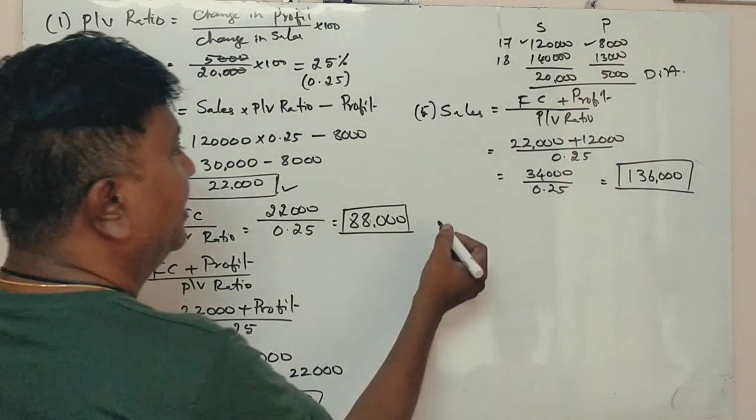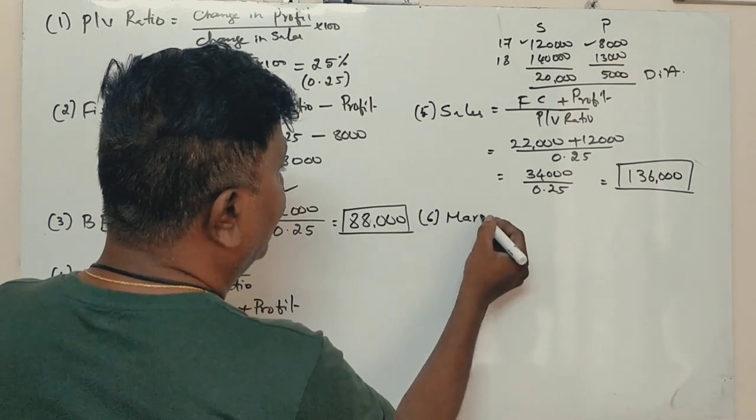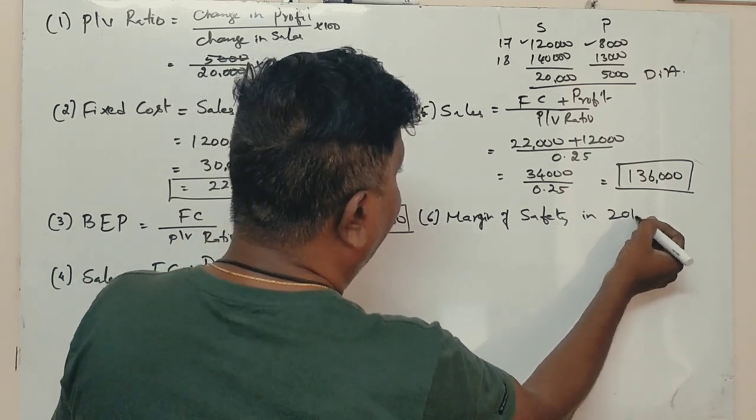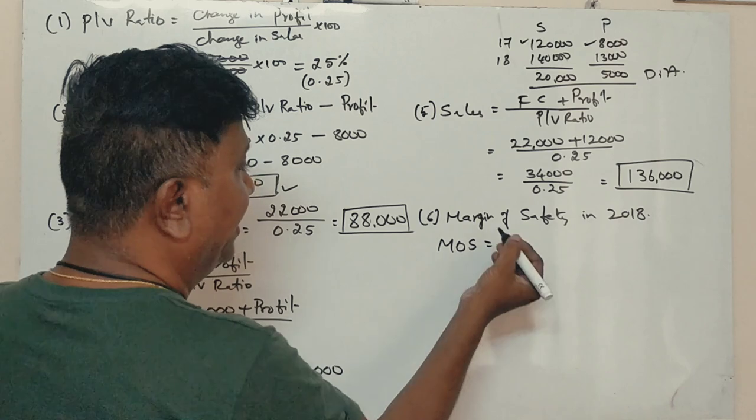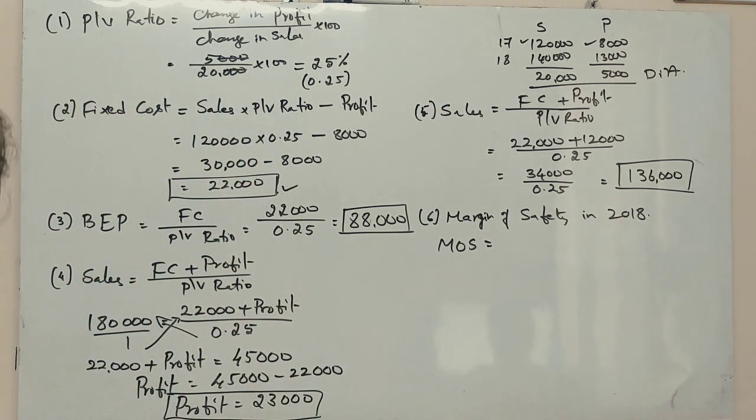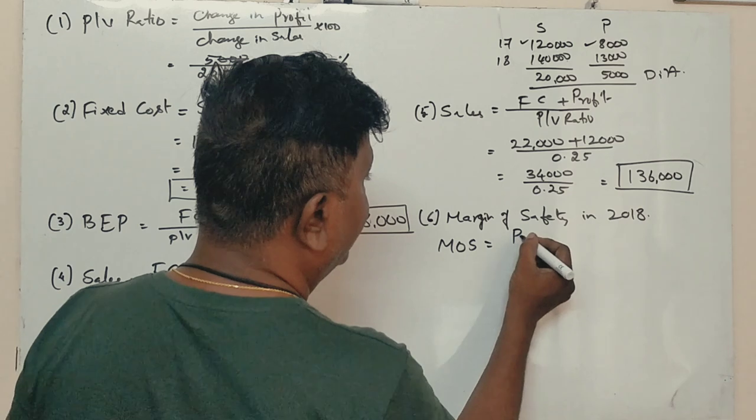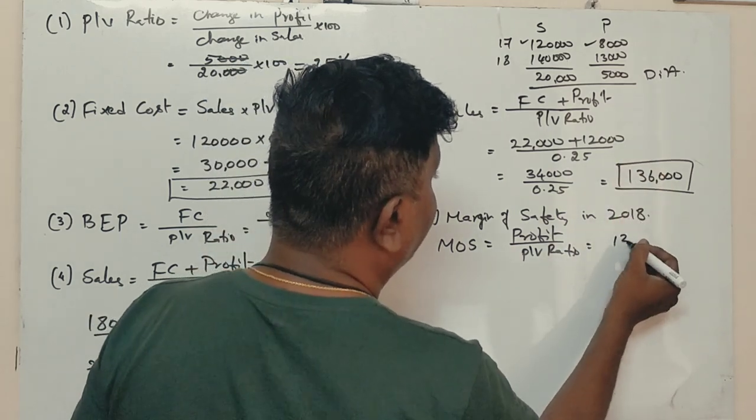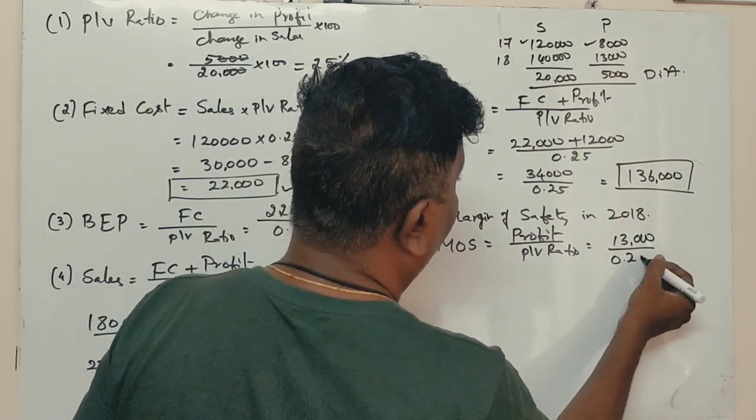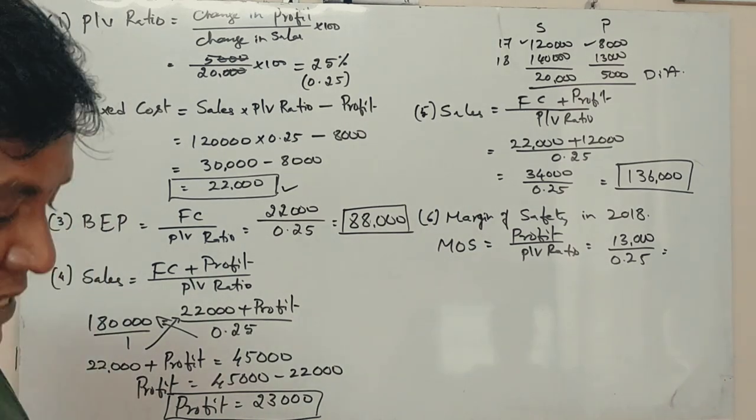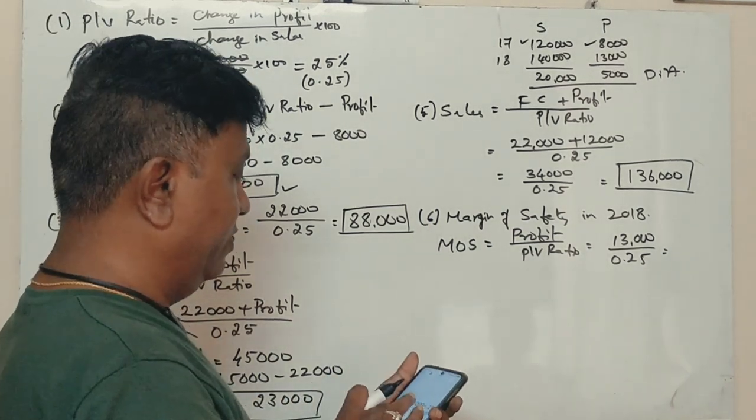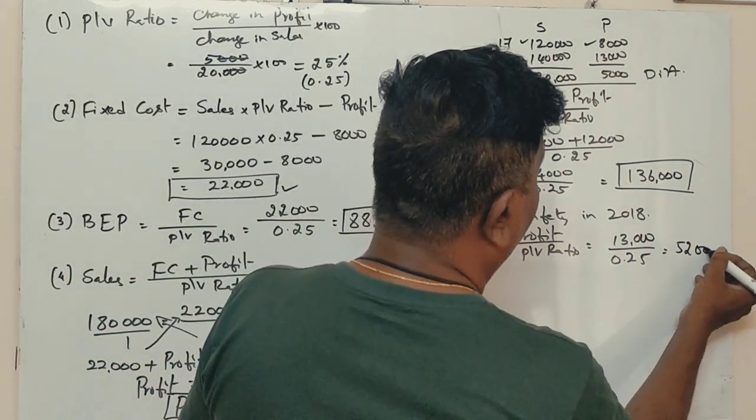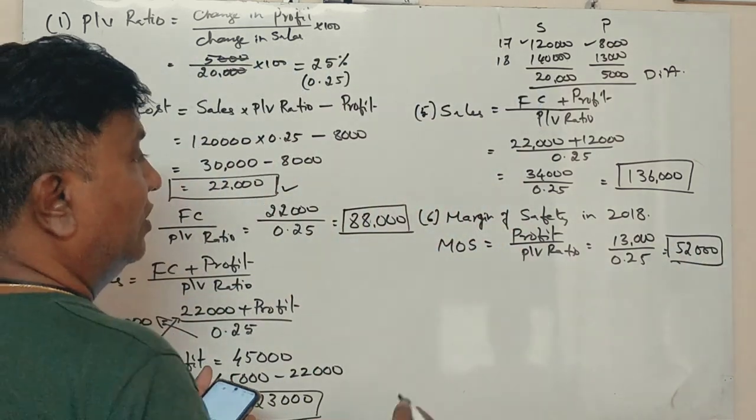Next, what is the margin of safety in 2018? Margin of safety or MOS equals profit divided by PV ratio. What is the profit in 2018? 13,000. What is the PV ratio? 0.25. So 52,000 rupees is the answer for the fifth question.